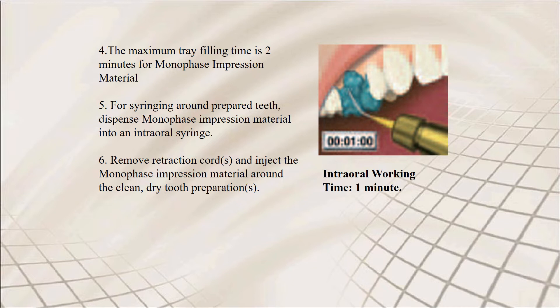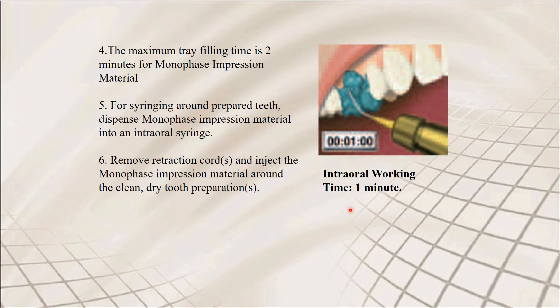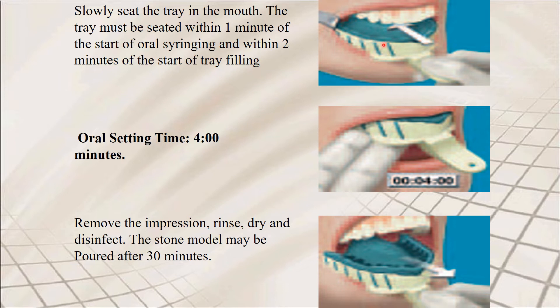One technique is to directly syringe the material into the mouth. The tray can be filled in two minutes. The syringe material can be dispensed from an intraoral syringe around the tooth surface. Once you remove the gingival retraction cord and inject the monophase impression material around a clean and dry tooth preparation, the intraoral working time is one minute. Seat the tray in the mouth within one minute of oral syringing and two minutes of tray filling. Oral setting time is four minutes. Remove the tray, rinse, dry, disinfect, and pour a model within 30 minutes.